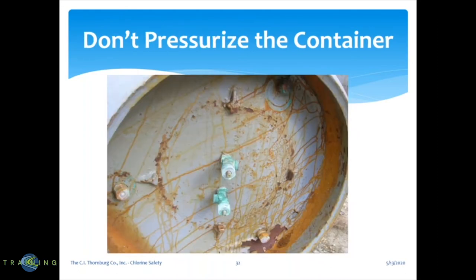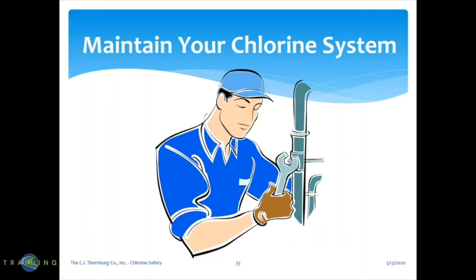Don't pressurize the containers or add pressure to them. This is what can happen — the concave end gets pushed out and it's not a good situation; you can see where chlorine has leaked out. Maintain your chlorine system and make sure it's functioning properly with no leaks and no conditions like chlorine running down the sides of your cylinders.